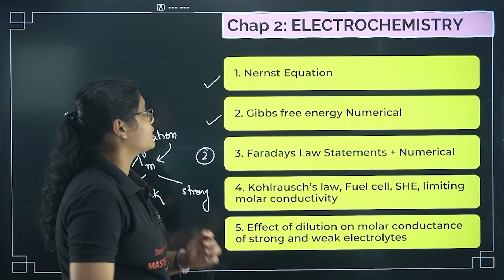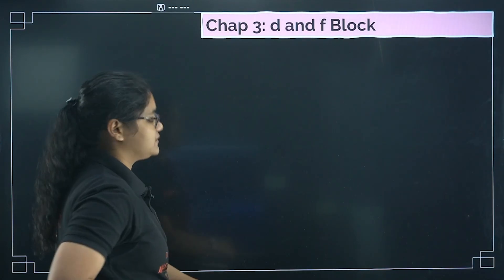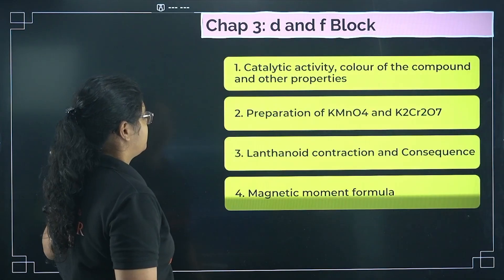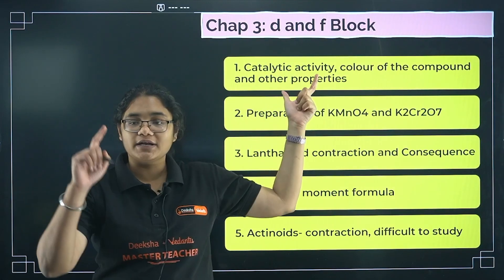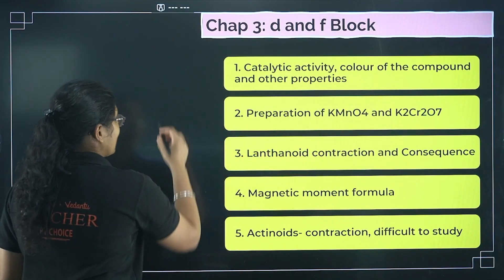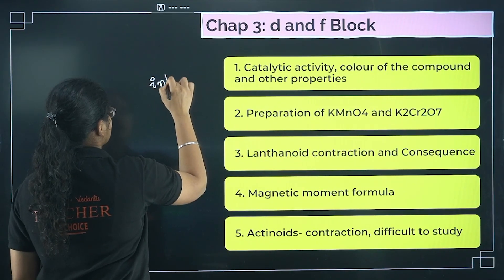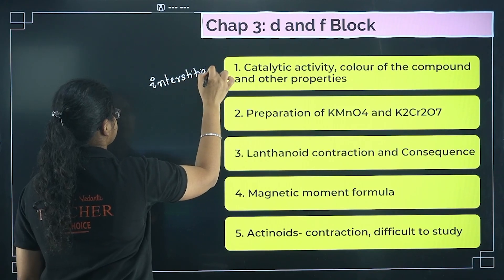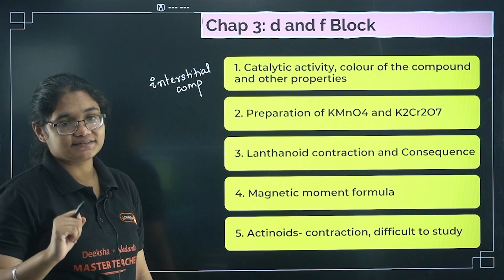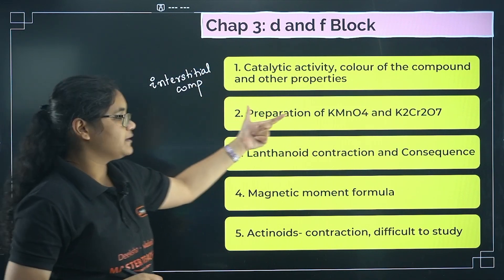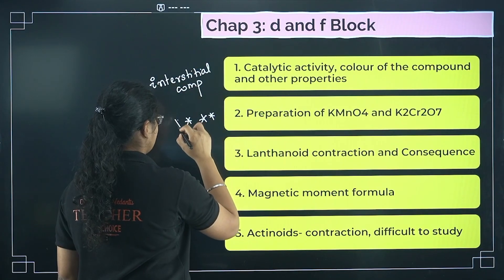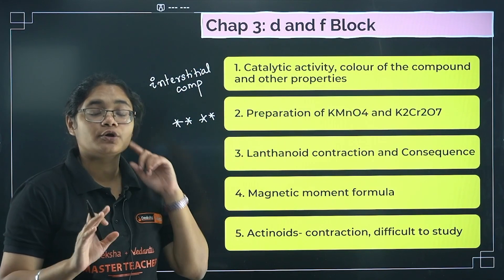Moving to D and F block. Very important topics: why transition elements show catalytic activity, why they form colored compounds, and what are interstitial compounds and their properties. Also, preparation of KMnO4 and K2Cr2O7 is very very important — one of them will definitely be asked, so prepare these reactions thoroughly with balanced equations.